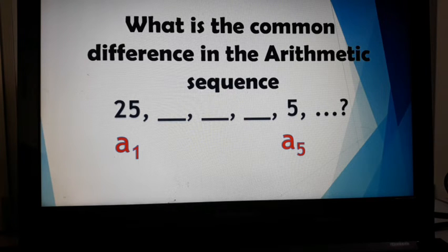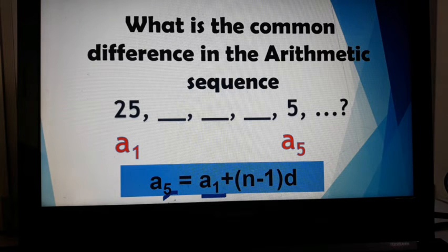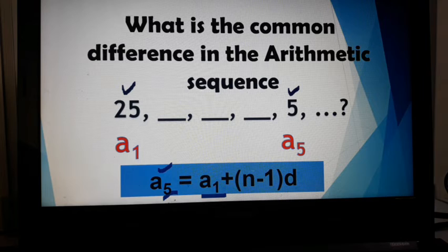In the formula we will use, we will use a sub n, our last term as a sub 5, then you have equal to a sub 1 plus n minus 1 times d. Your a sub 1 will be coming from this given term. Our a sub 5 can be obtained from the value of 5.